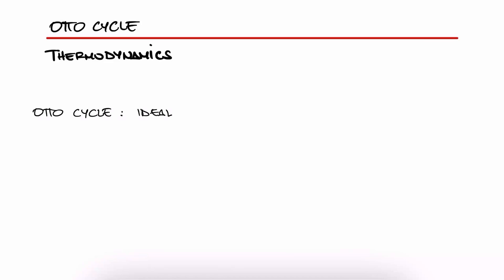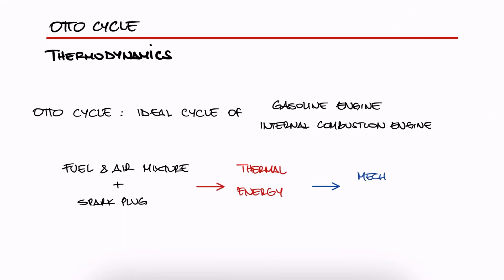The Otto cycle is the ideal cycle for what we know today as a gasoline engine or an internal combustion engine. It's a thermodynamic cycle that uses gasoline and a spark igniter to generate thermal energy that is then used to create motion.